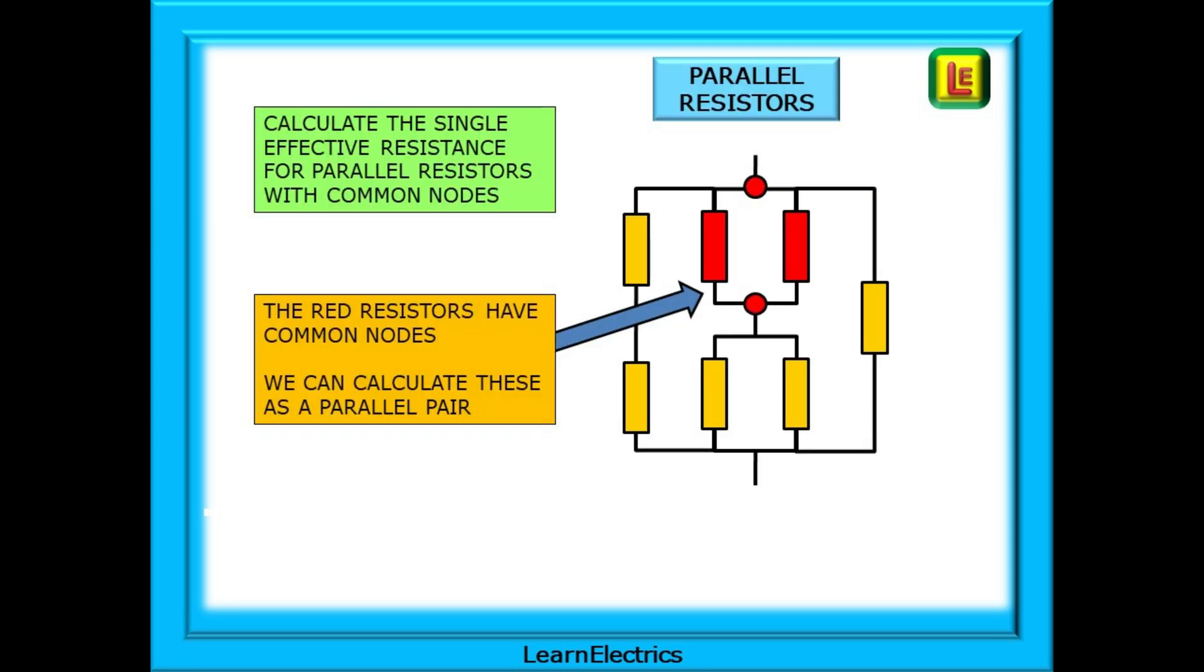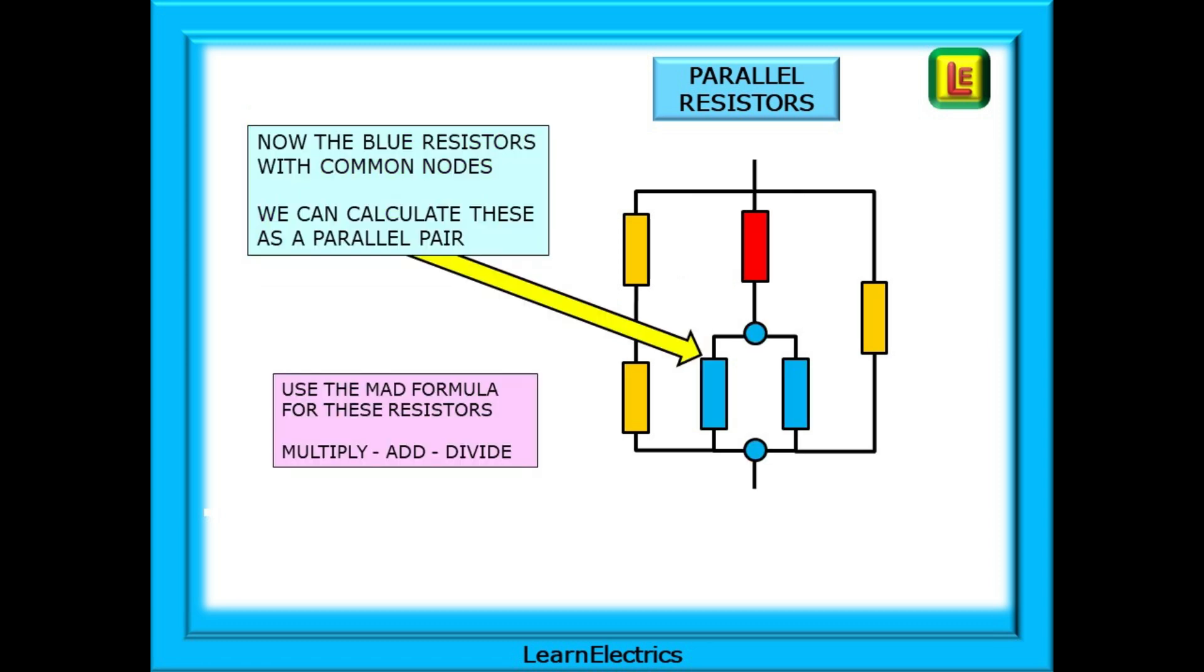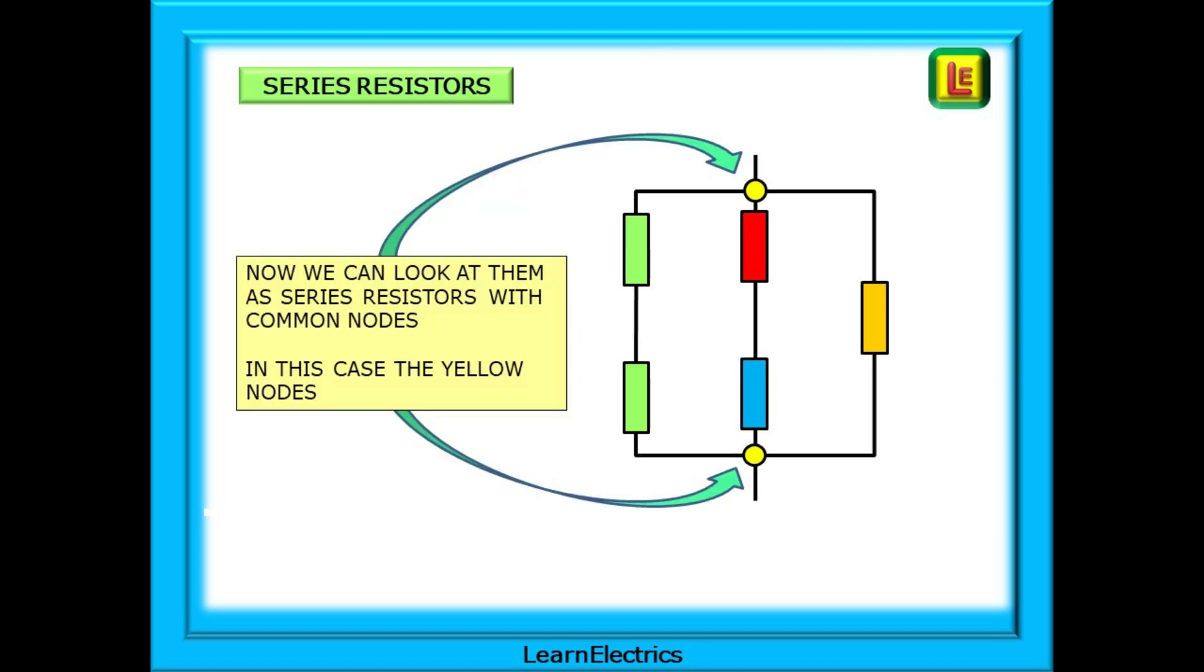Where should we begin with the resistor matrix? We can calculate the single effective resistance for the parallel resistors that have common nodes. The red resistors here have common nodes so we can calculate these as a parallel pair using the MAD formula. Now the blue resistors as they have common nodes too. We can calculate these as a parallel pair. Now we can look at them as series resistors with common nodes, in this case the yellow nodes. We have resistors in series that can be added together.